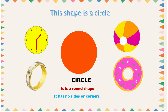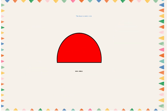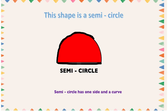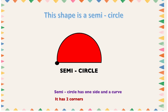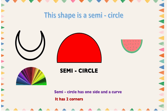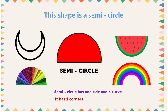This shape is a semicircle. A semicircle has only one side and one curve line, and it has two corners: one, two.